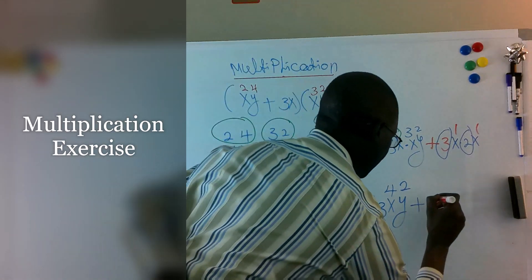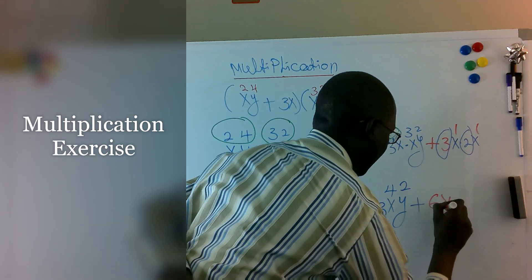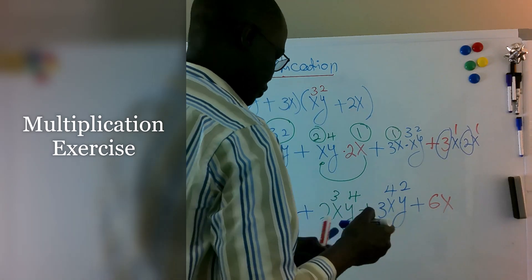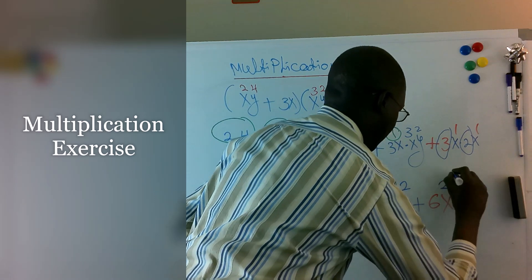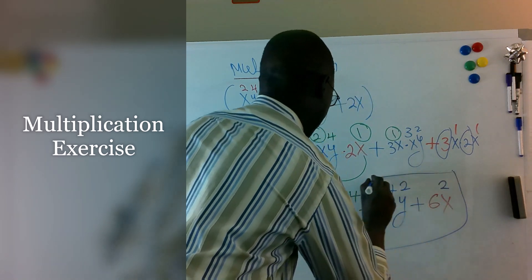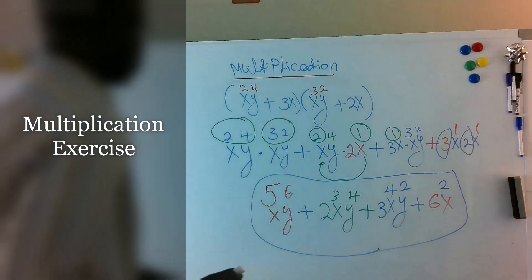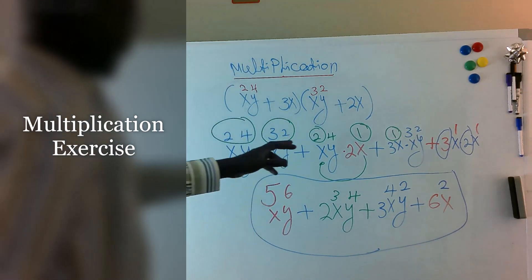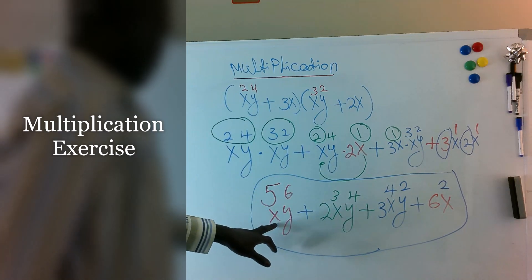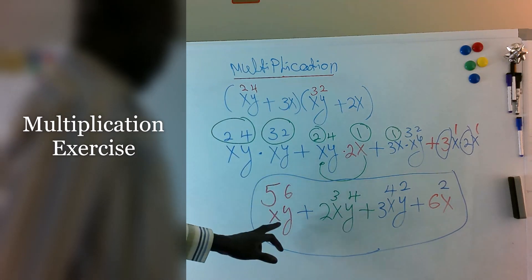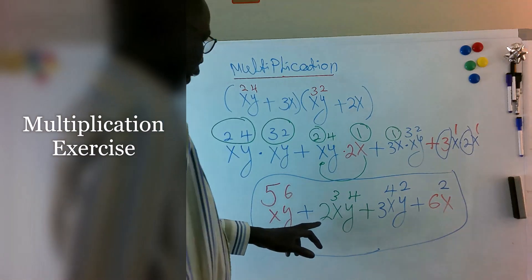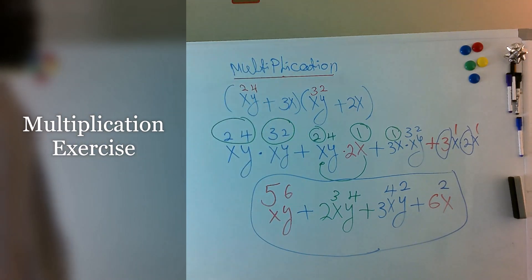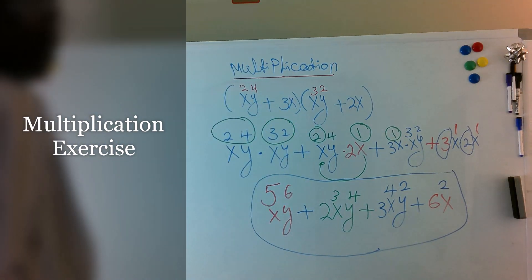That should be 6x squared. So combining everything, your answer should be x^5 y^6 plus 2x^3 and so on. Like I said, we combine the exponents on top, so it's x^5 y^6 plus the remaining terms. That's your answer for this. If you have questions, let me know — thank you.